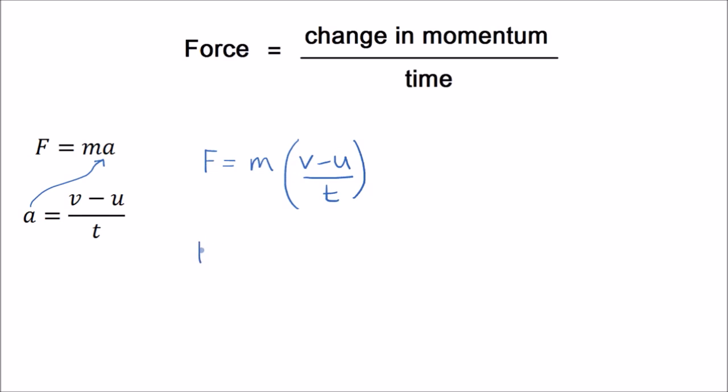Now it's just a case of multiplying out the brackets. So here we have the change in momentum at the top. Because remember P equals MV. Momentum is mass times velocity. So this here is the change in momentum. And it's divided by the time taken. And that gives you the force of the impact.